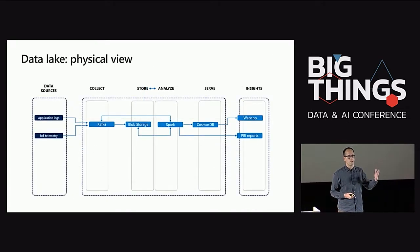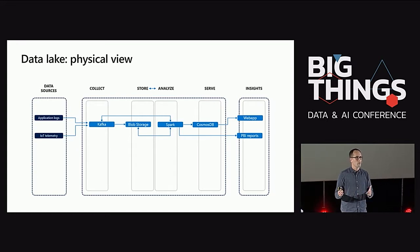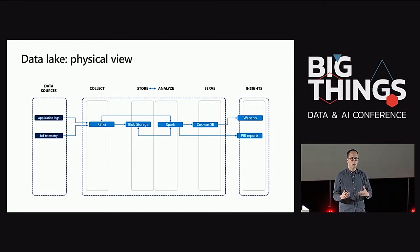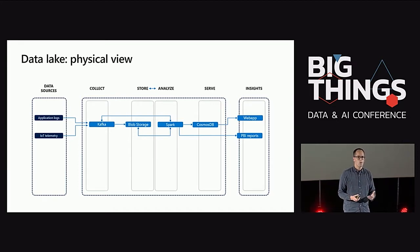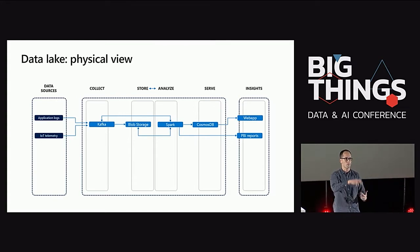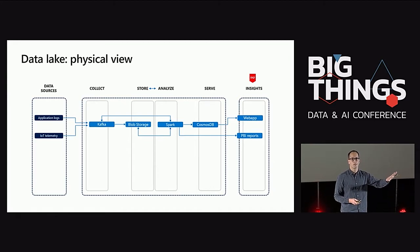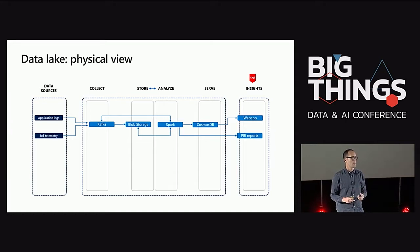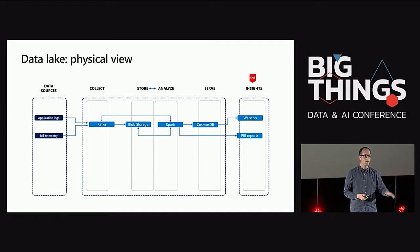This is a typical data architecture where we have different data sources, we collect data in Kafka, then we land this data in a blob storage or raw data store, then we have some processing — some Spark, whatever — and maybe real-time processing also, then Cosmos DB, and then some reports and web application for real-time consumption. When we have this type of spike, the front-end developer or the user using the web app realizes they see the spike.